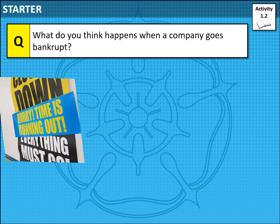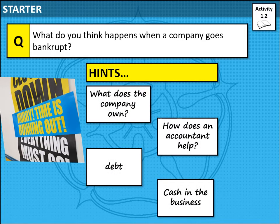What I would like you to do now is think about what happens when a company goes bankrupt. Here are some hints: what does a company own? How does an accountant help out, do you think? And is there only debt or cash in the business?